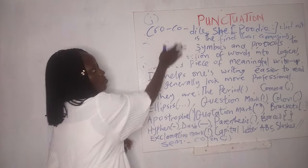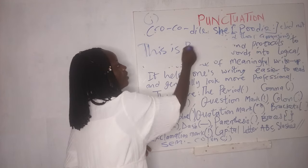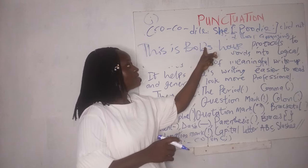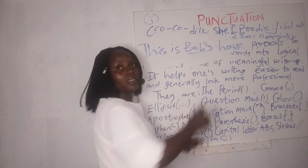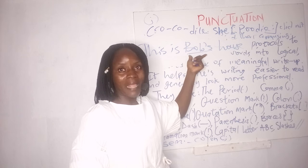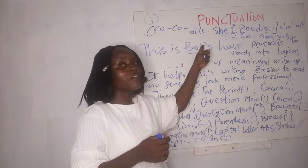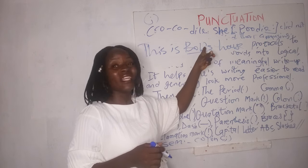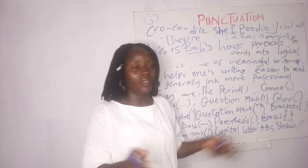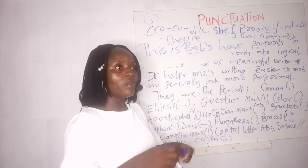The apostrophe can also be used to show ownership. For example: 'This is Bob's house.' The apostrophe here shows that the house is owned by Bob. Bob possesses the house. So the first use was contraction — contracting two words together — and this second use is to show ownership or possession. Another example: 'Vanessa's village' or 'Flora's pen.'